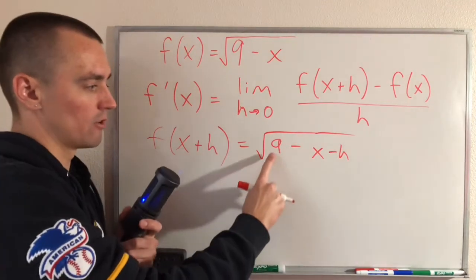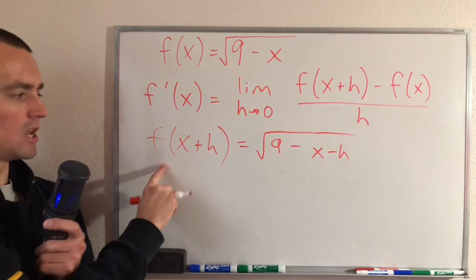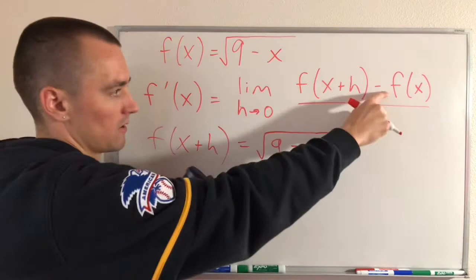So doing that is actually going to give us 9 minus x minus h. So now the square root of 9 minus x minus h is f(x+h). So now if we plug this into our limit definition, we're going to end up with a limit which represents the derivative of f.